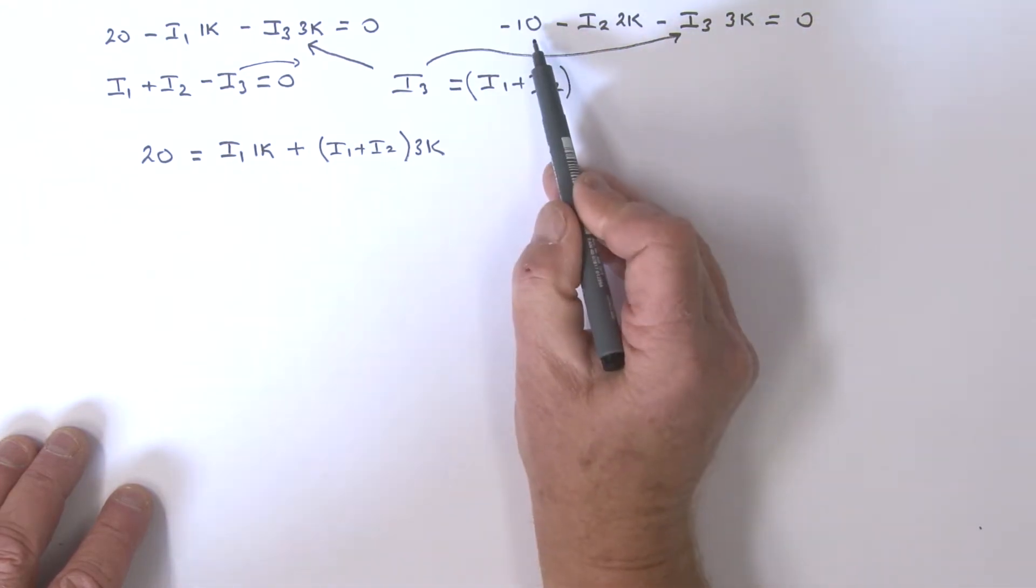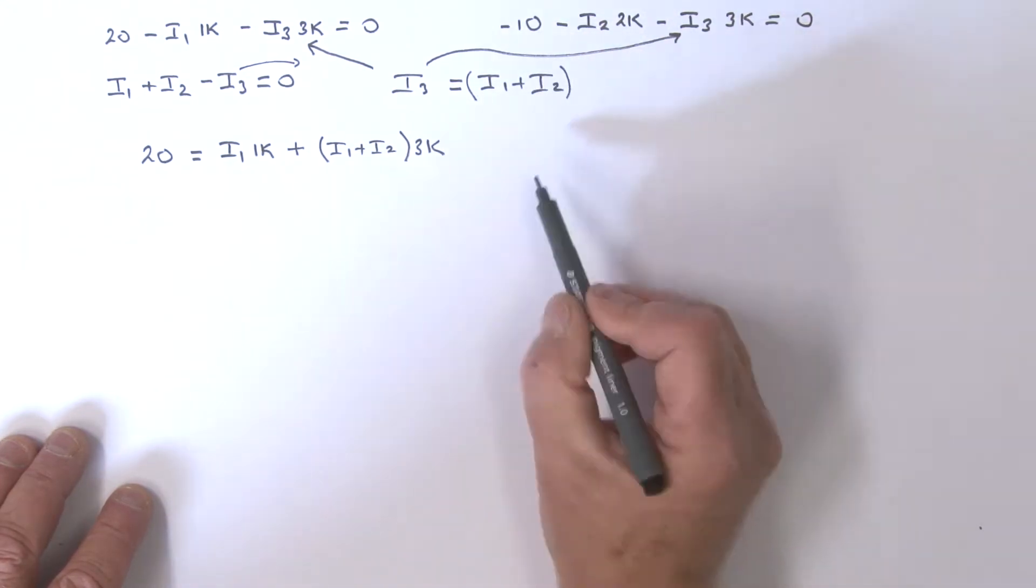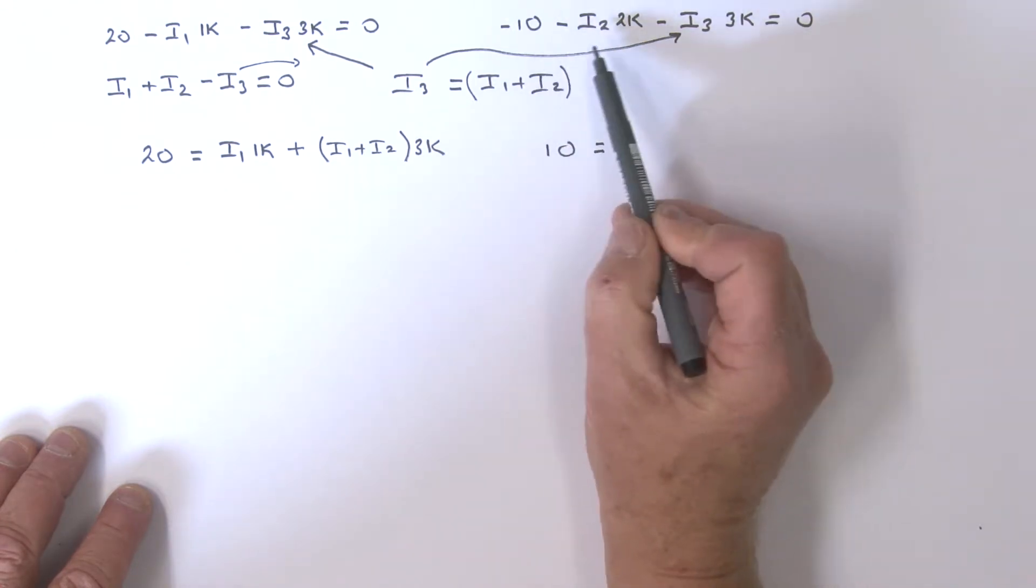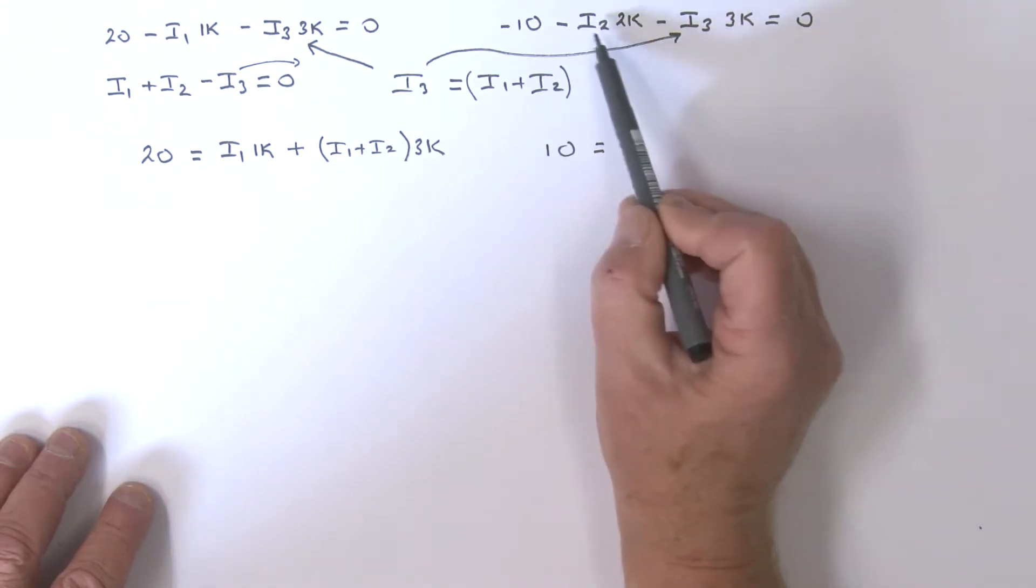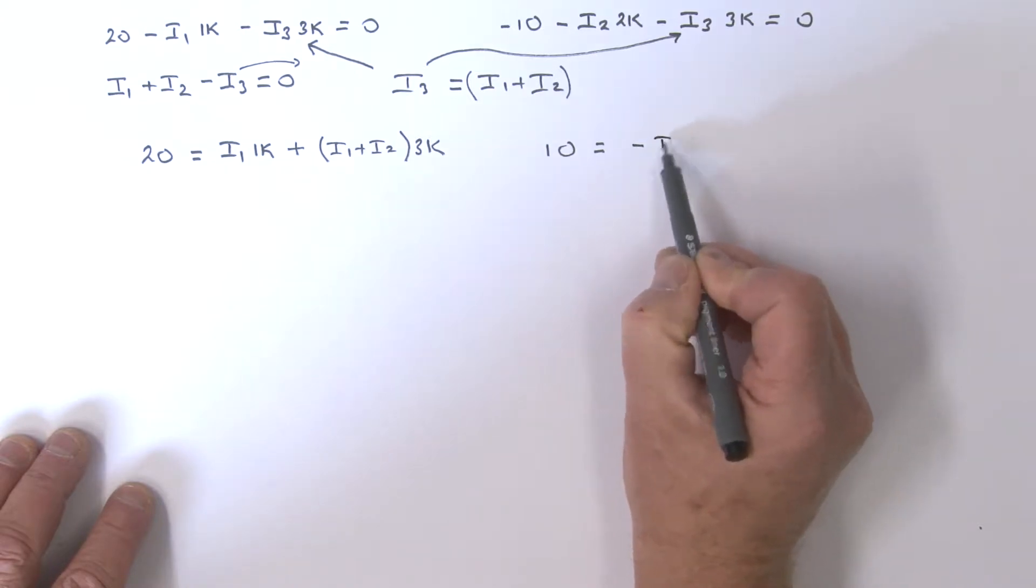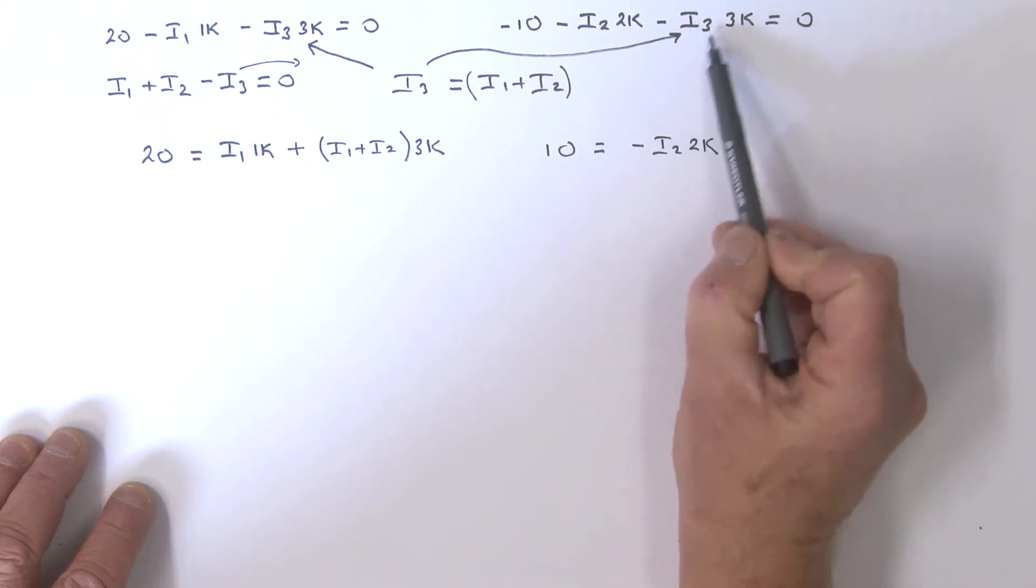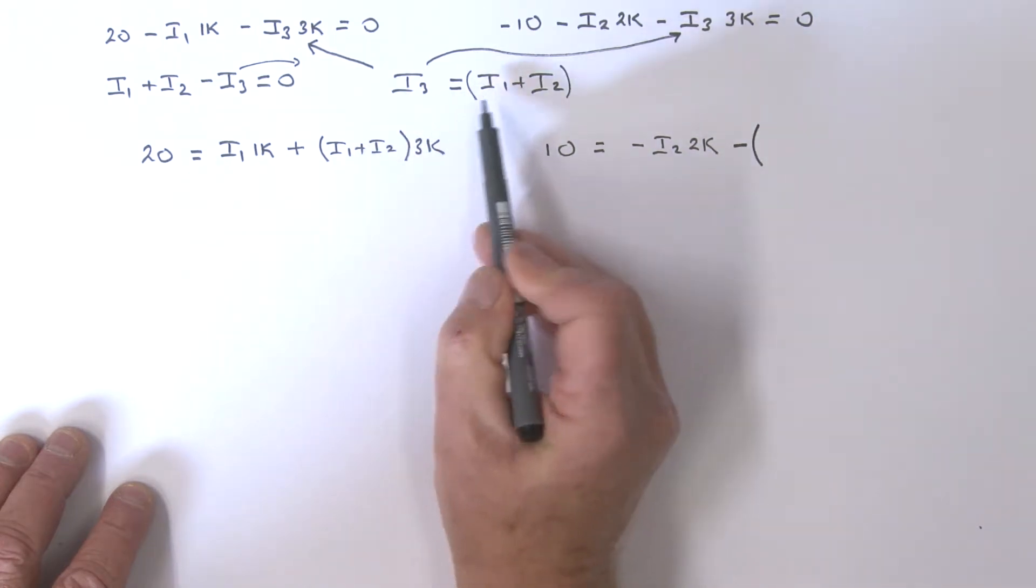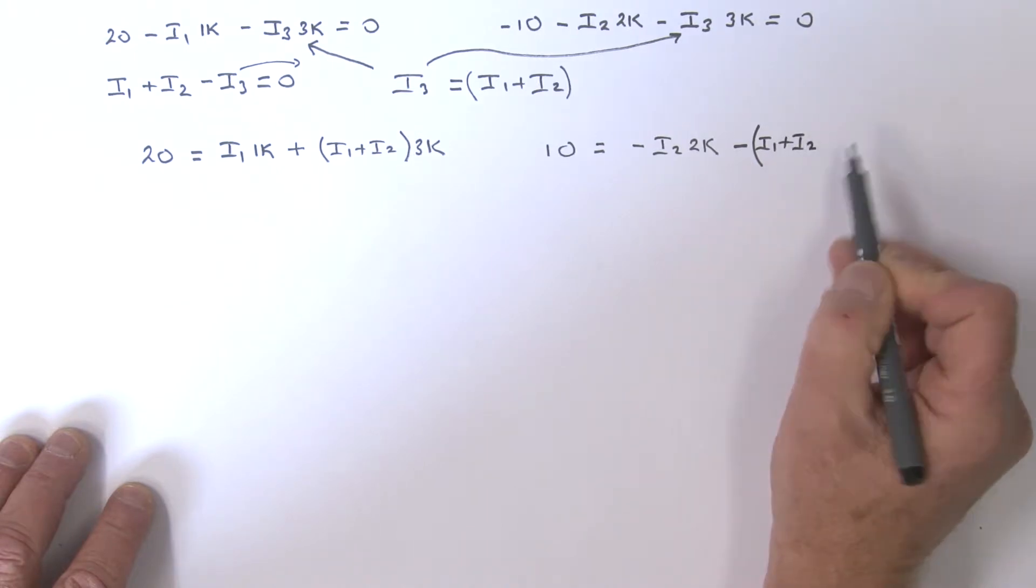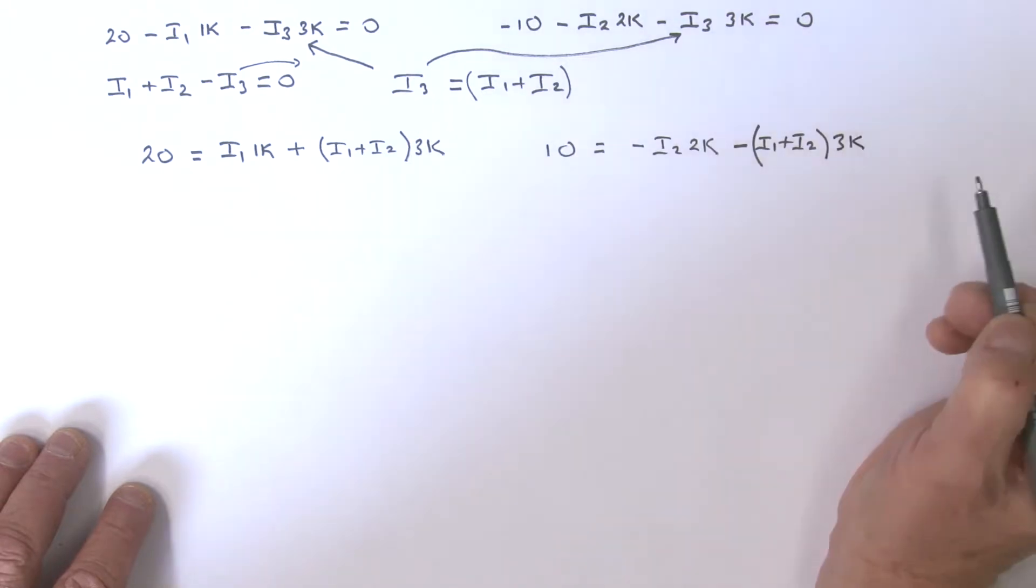Let's now work on this one. I've taken the 10 to the other side, so that's 10 equals - I've got a minus i2 times 2k. I'm getting rid of this i3, so I'll maintain that minus. I'll open a bracket, and i3 is i1 plus i2, in the bracket, multiplied by 3k.